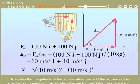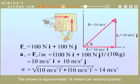To obtain the magnitude of the acceleration, we add the square of the X and Y components of the acceleration vector, and take the square root. The answer is approximately 14 meters per second squared.